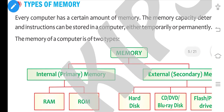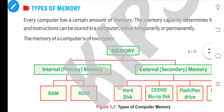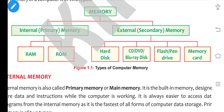Next topic is types of memory. There are two types of memory: internal memory and external memory. Internal memory is also called primary memory, and external memory is also called secondary memory. Internal memory is divided into two types: RAM and ROM. External or secondary memory is divided into many types of storage devices.